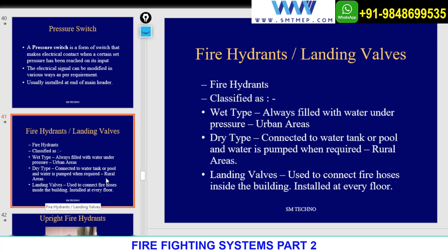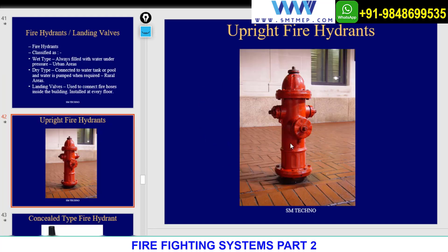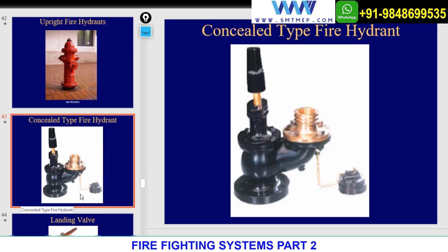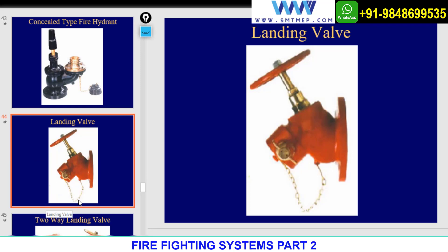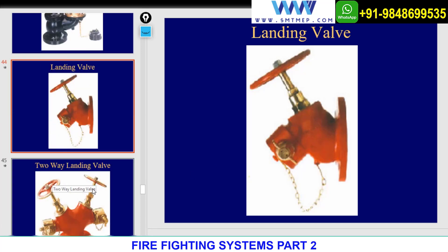Fire hydrants include stand post type and concealed type. Concealed type has a manual cover but is generally not recommended — the stand post type is most common. Landing valves can be one-way or two-way. A landing valve with a pressure regulating option allows you to set the pressure as per system requirements. The one shown on screen is a normal single-way landing valve.